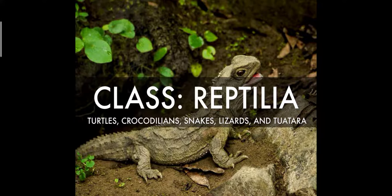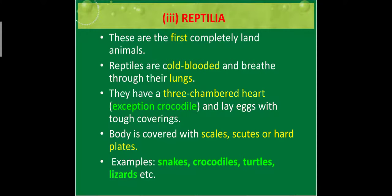Our third class is class Reptilia. Reptilia includes turtles, crocodiles, snakes, lizards and tuatara. They are the first complete land animals. They are cold-blooded and have well-developed lungs. They have a three-chambered heart except the crocodile, which has a four-chambered heart.